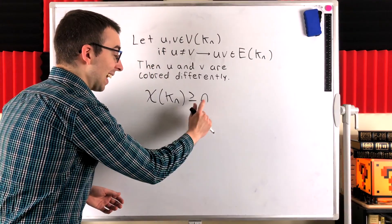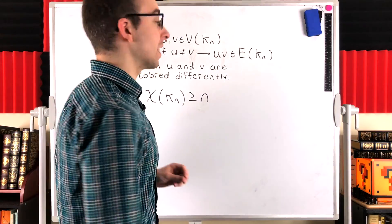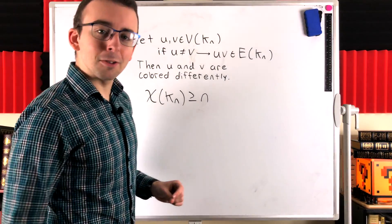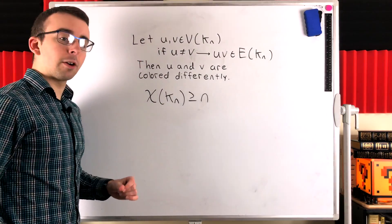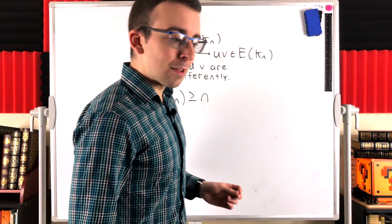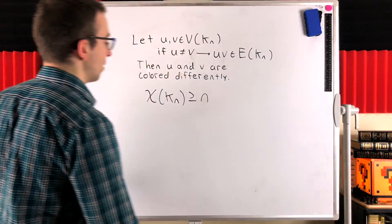So certainly we need at least n colors to color KN, since all of the vertices need to be colored differently. Is n colors enough? Well, of course it is. If we color all of the n vertices with different colors, then any adjacent vertices will have to be colored differently, because all the vertices are colored differently.